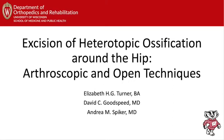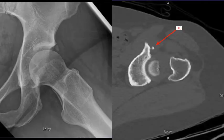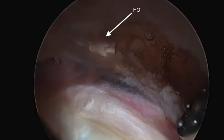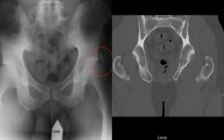We present our preferred approach to excision of heterotopic ossification around the hip, with discussion of both arthroscopic and open excision. Here are our disclosures. We present a number of cases of HO around the hip in different patients.